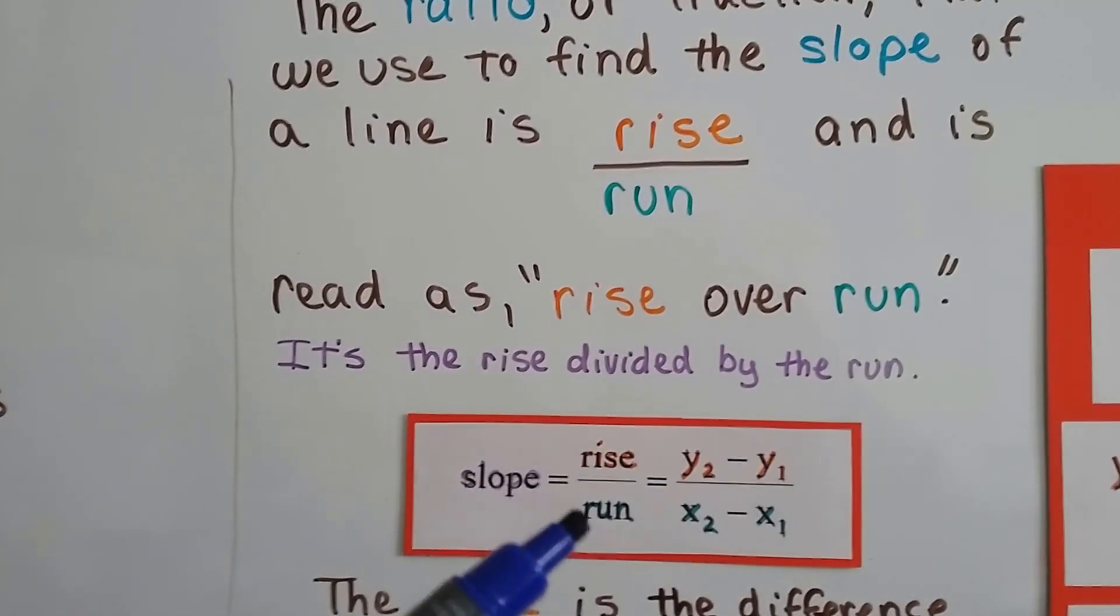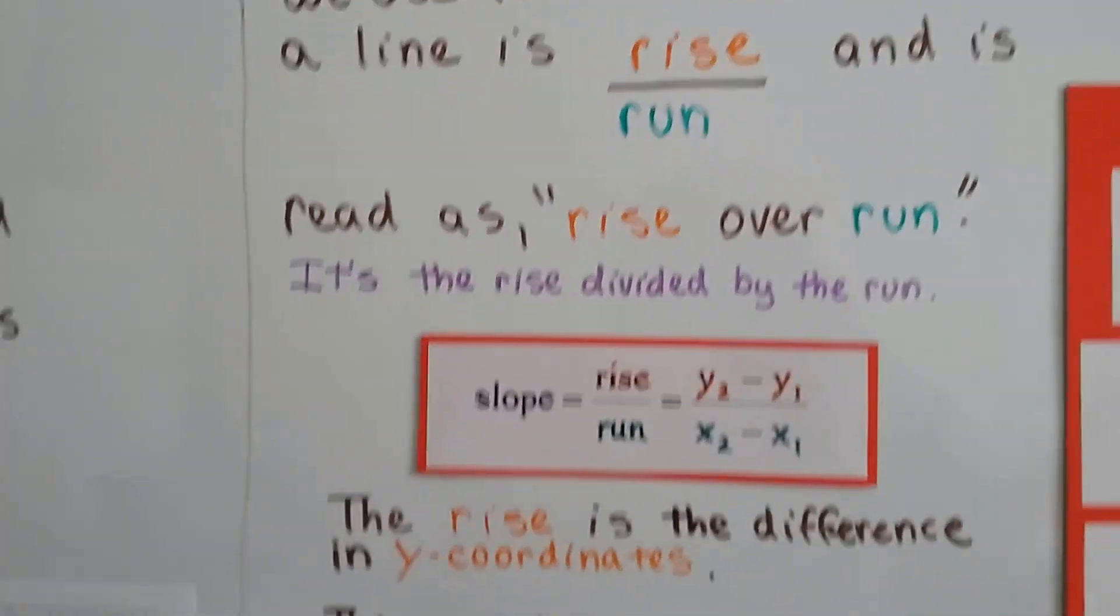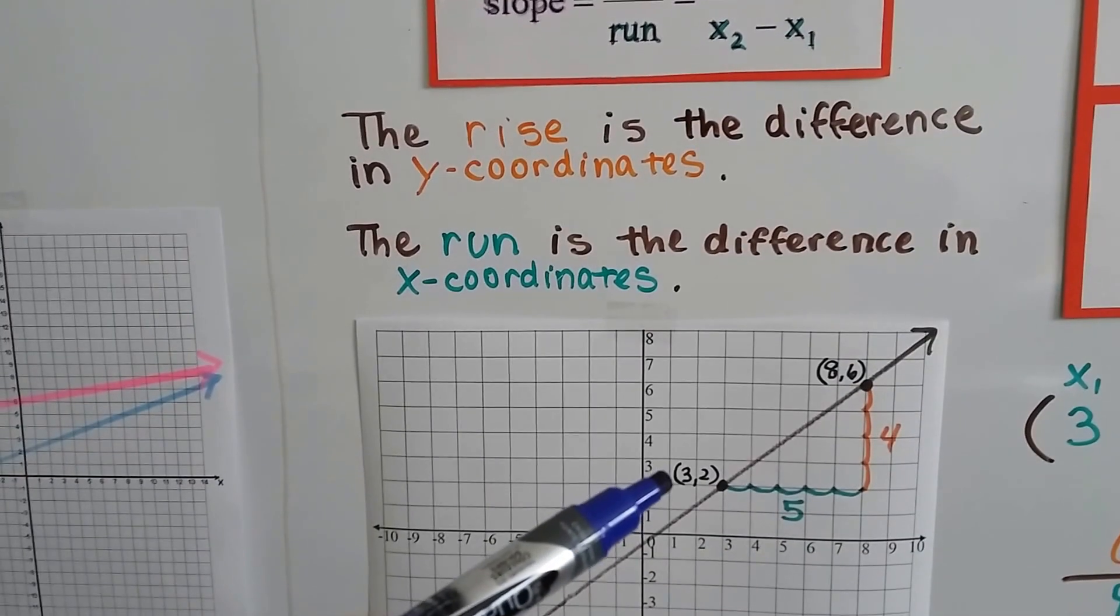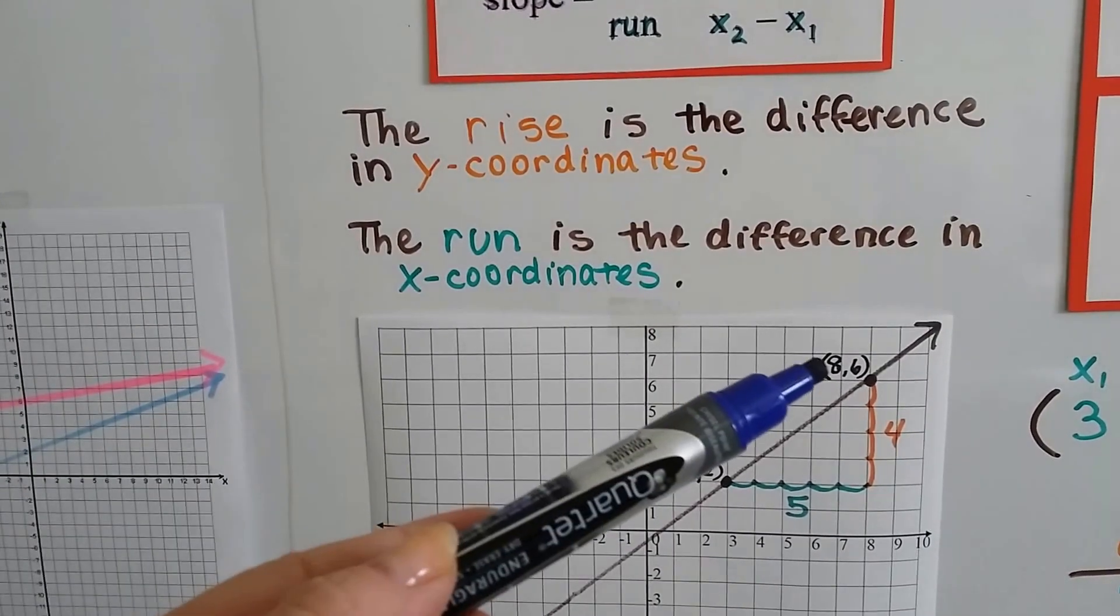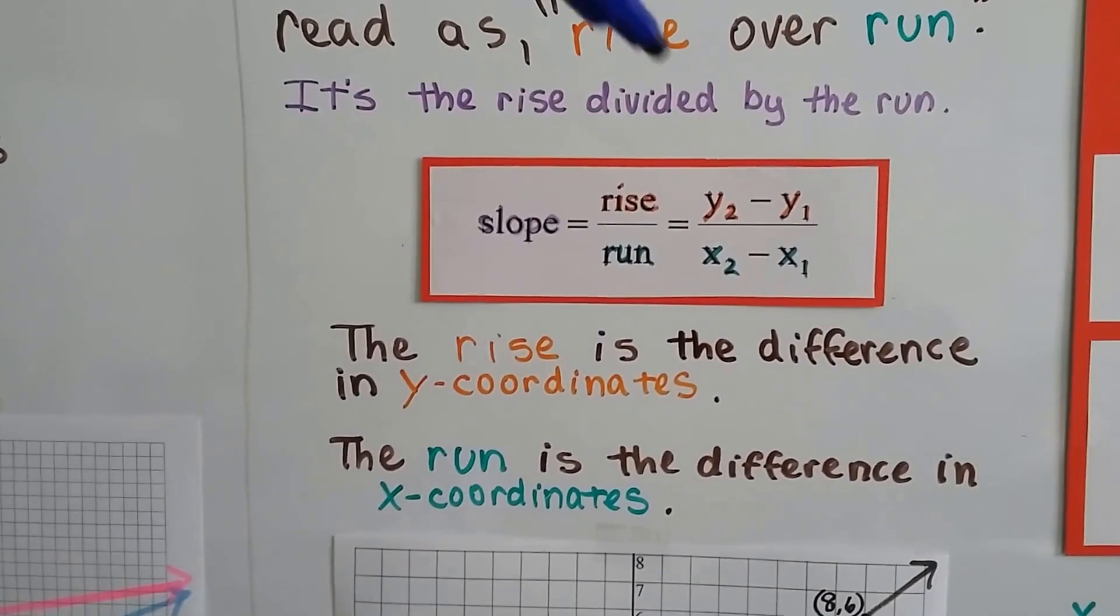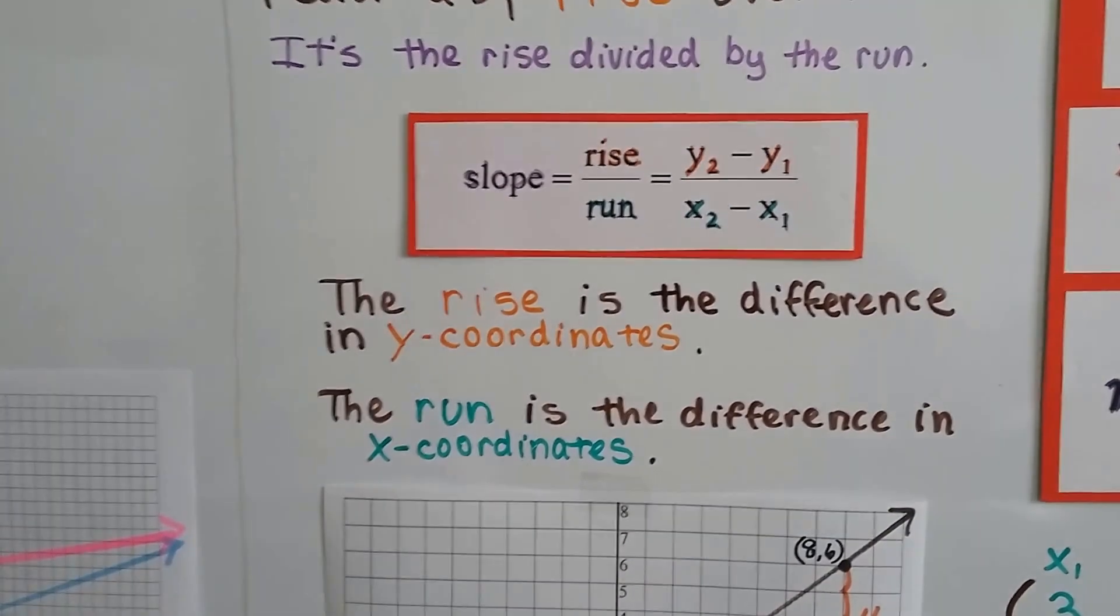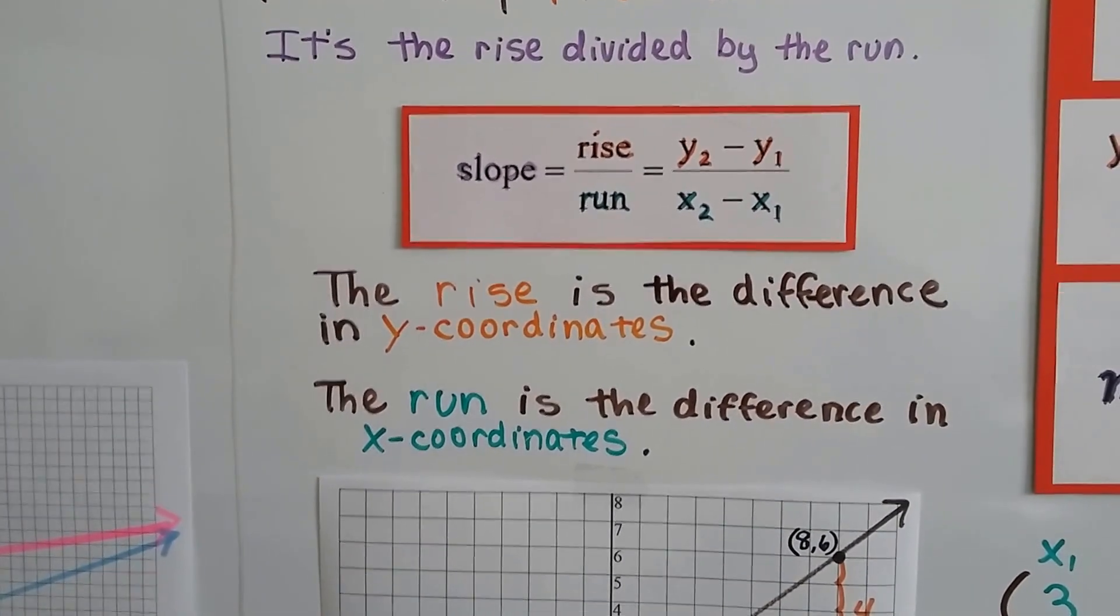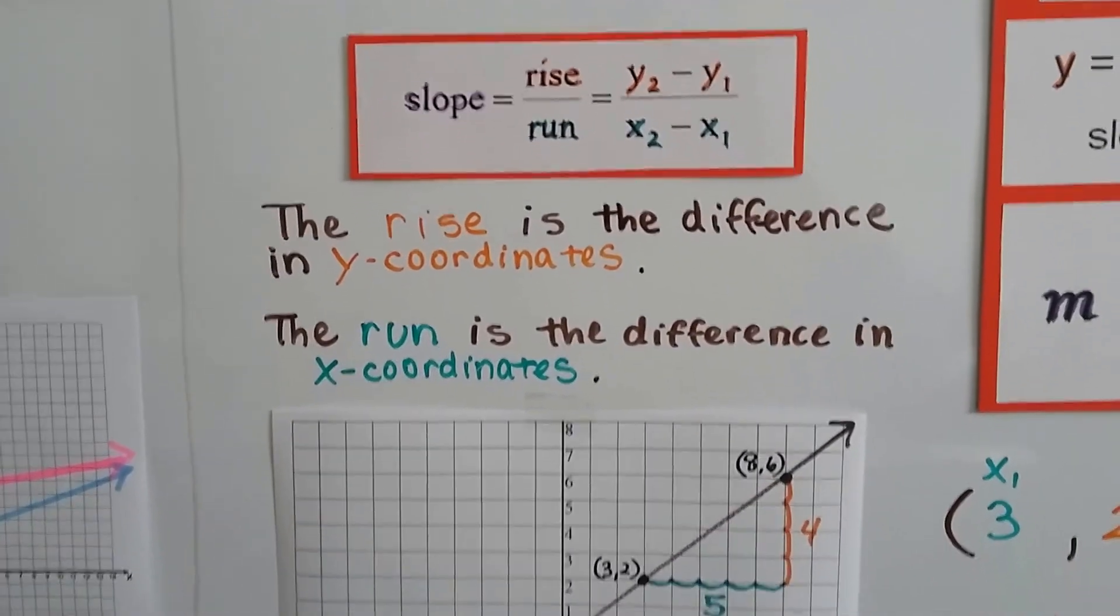The rise is for x and y coordinates. You have two coordinates, two ordered pairs. This would be x1, y1, and that would be x2, y2. We choose from left to right. So we do y2 minus y1 as a numerator and x2 minus x1 as the denominator. And the rise is the difference in the y coordinates from each other. And the run is the difference in x coordinates from each other.